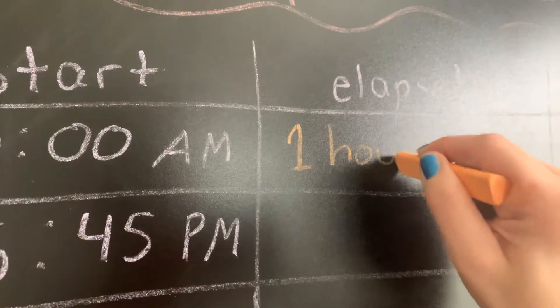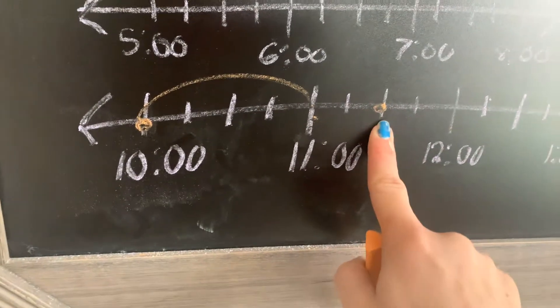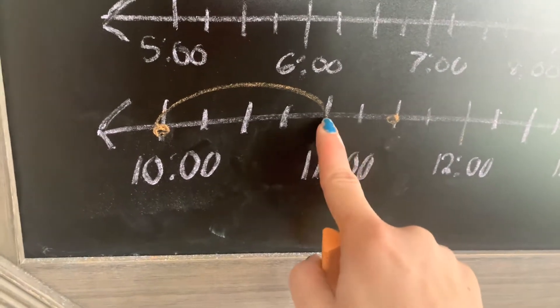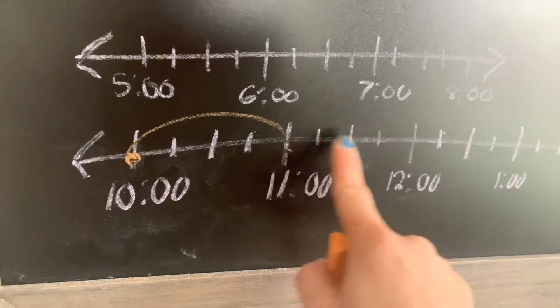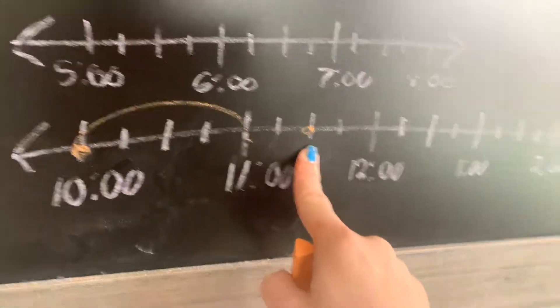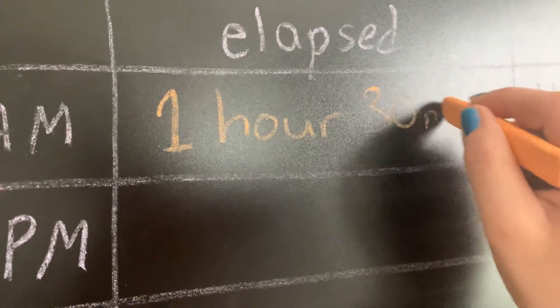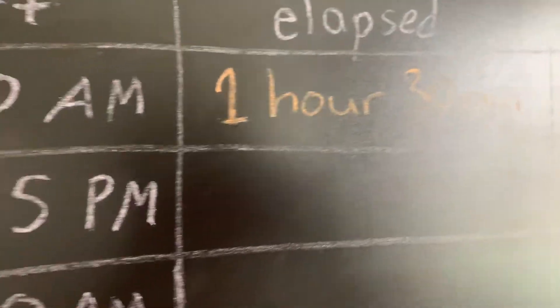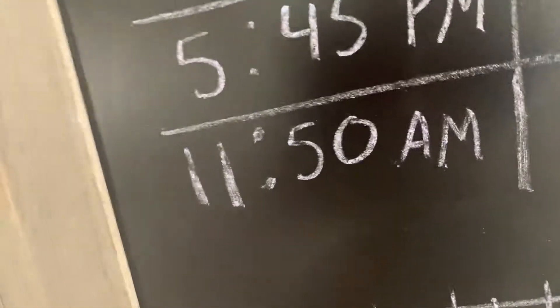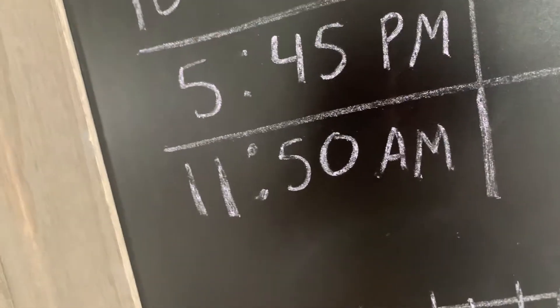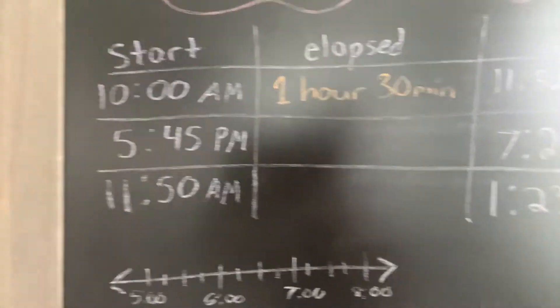So I'm going to write one hour up there, and then I've got to go from 11 o'clock to 11:30. So I know that's 15, and I did it in quarters also this time, 15, 30. So that's going to be 30 minutes. From 11 to 11:30 is 30 minutes. So one hour, 30 minutes.